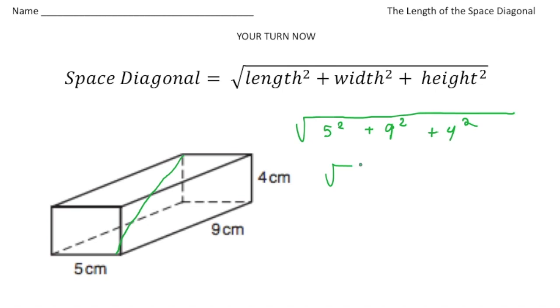And when I simplify that, well, 5 squared, I know, is 25. 9 squared is 81. And 4 squared is 16. And 25 plus 81 plus 16 is 122. And if I use a calculator to get the square root of 122, and if I round, I'm going to get an answer of 11.05 centimeters.